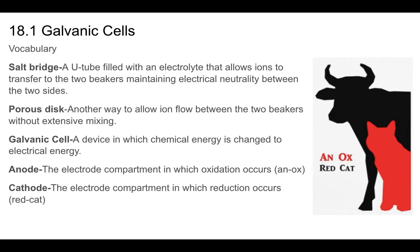The U-shaped tube between the two beakers is called the salt bridge; it bridges the two beakers and contains an ionic salt at high concentration. Alternatively, a porous disk can be used to allow controlled ion flow — just enough to maintain electrical neutrality on each side without allowing free mixing. The entire device is called a galvanic cell, and it converts chemical energy to electrical energy.